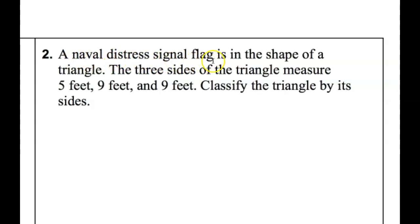A naval distress signal flag is in the shape of a triangle. The three sides of the triangle measure 5 feet, 9 feet, and 9 feet. Classify the triangle by its sides. This time it's asking us to remember the names of triangles based on its sides. So this is going to either be equilateral, or isosceles, or scalene. So which type of triangle will this be? Answer that for me, please. All right, so if we notice, we have two of the links are the same number. They're congruent, but not three. So this is not equilateral. If you have two equivalent sides, this is going to be an isosceles. It is not scalene, because all four numbers are not different.